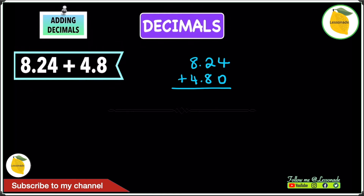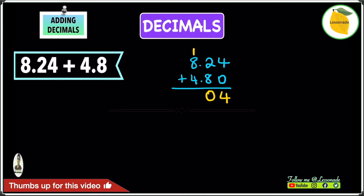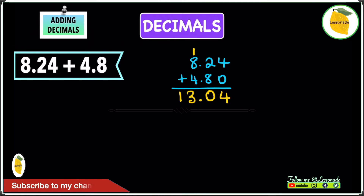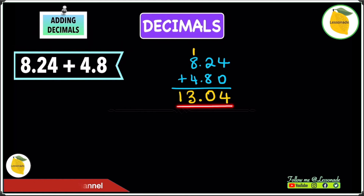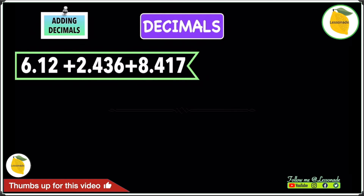4 plus 0 is 4. 8 plus 2 is 10 — write 0 and take the 1 as a carry. 1 plus 8 is 9, and 9 plus 4 is 13. Write the decimal point and we get an answer of 13.04.